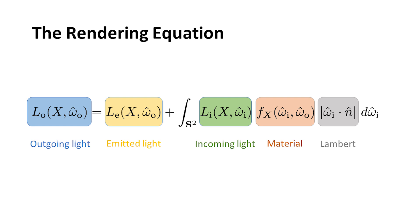Where the right equation comes in, it has an incoming light, a material, and this Lambert geometric term. The incoming light basically says, given a point and some direction, what light is coming from that direction?